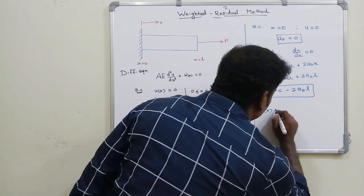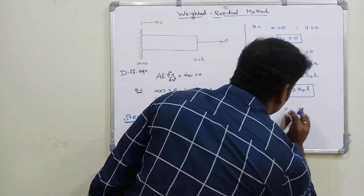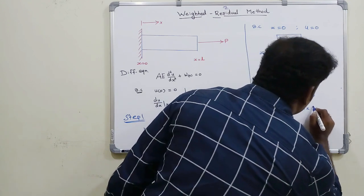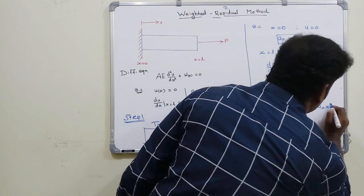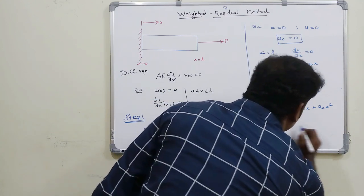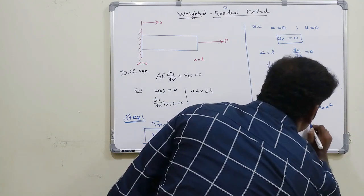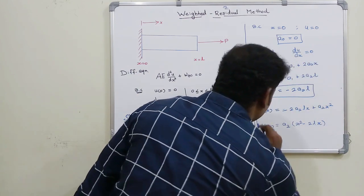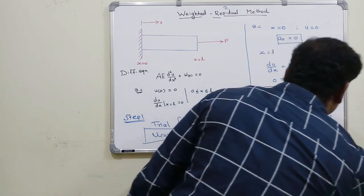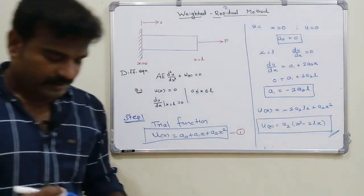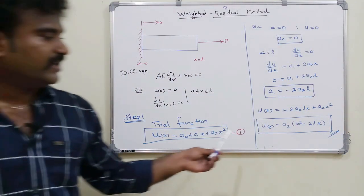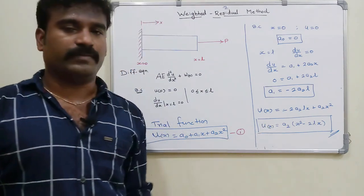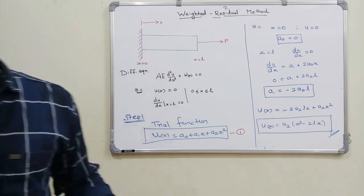After substituting the boundary condition values, we get: u(x) = a₂(x² − 2Lx). This is the simplified trial function. However, we still don't know the value of a₂, so we will solve for it using the Weighted Residual Method.